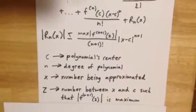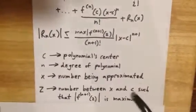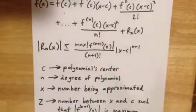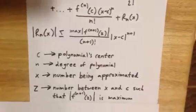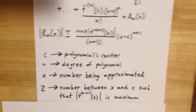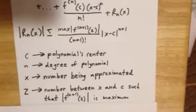Remember, x is the number being approximated, and c is the polynomial center. So you have two values, and z has to be between those. You just go through it and find your maximum that would make this maximum.